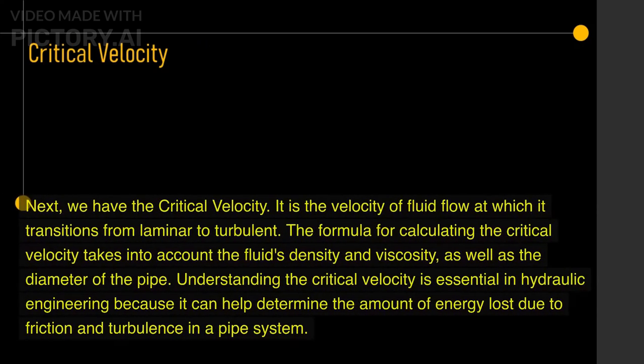Next, we have the critical velocity. It is the velocity of fluid flow at which it transitions from laminar to turbulent. The formula for calculating the critical velocity takes into account the fluid's density and viscosity, as well as the diameter of the pipe. Understanding the critical velocity is essential in hydraulic engineering because it can help determine the amount of energy lost due to friction and turbulence in the pipe system.